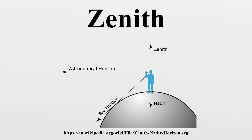With the horizon perpendicular to the zenith, the astronomical meridian is also determined by the zenith, and is defined as a circle on the celestial sphere that passes through the zenith, nadir, and the celestial poles. A zenith telescope is a type of telescope designed to point straight up at or near the zenith.